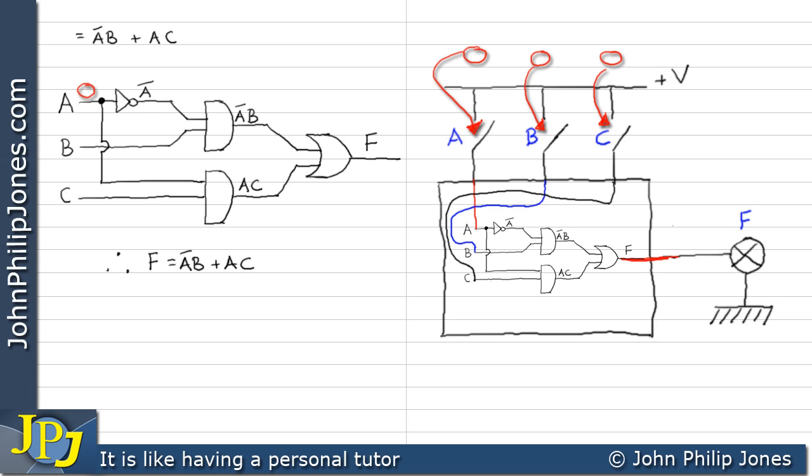Now if we go to the combinational logic circuit we can see that A, B and C must be zero. So not A must be a one which goes into the AND gate. And this zero also goes into the AND gate. If we look at A and C we can see that they go to the second AND gate. So we have a zero and a zero to the second AND gate.